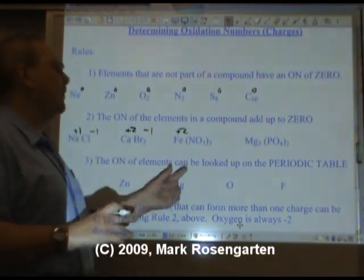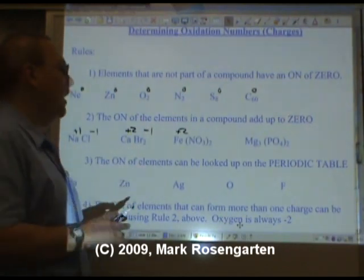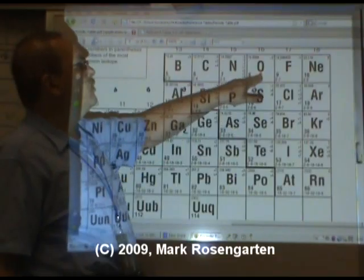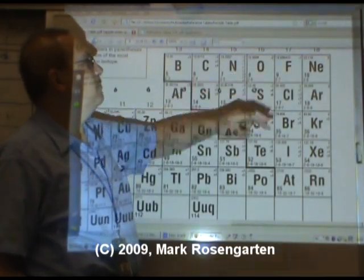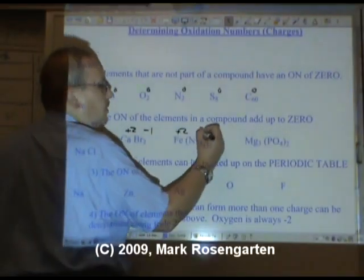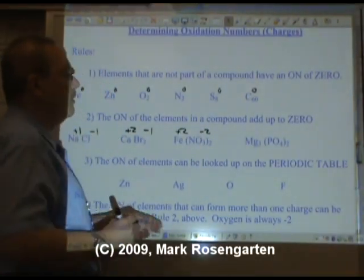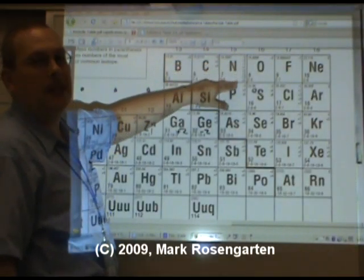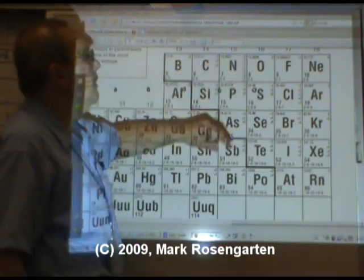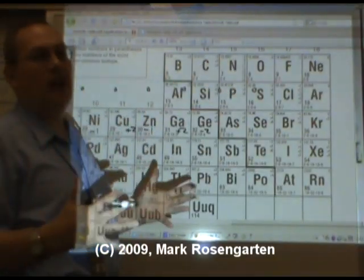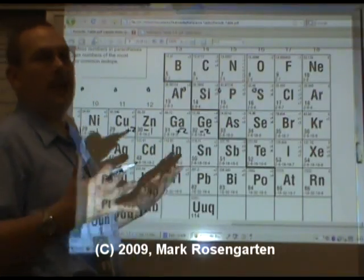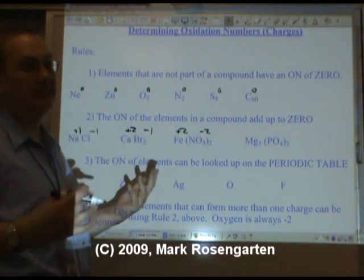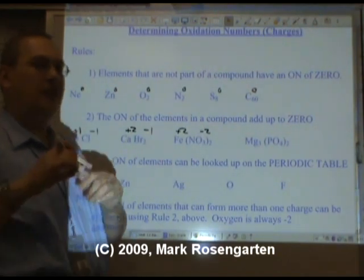Iron has two charges listed on the periodic table. Iron can either be plus two or plus three. So which one is it? This two down here tells us that the iron is plus two. If the iron was plus three, it would have the three down here. Now it's normally enough to just find the charge of the nitrate, but for the sake of fun, let's get the charge of the oxygen and nitrogen separately. Oxygen only has a charge of minus two listed on the periodic table, so oxygen is always going to be minus two.